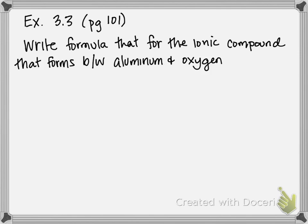That's typically what you'll be using more frequently, and it's a little bit easier to figure out than molecular compounds. The question asks us to write the formula for the ionic compound that forms between aluminum and oxygen.